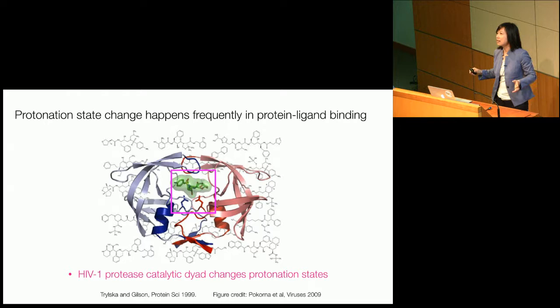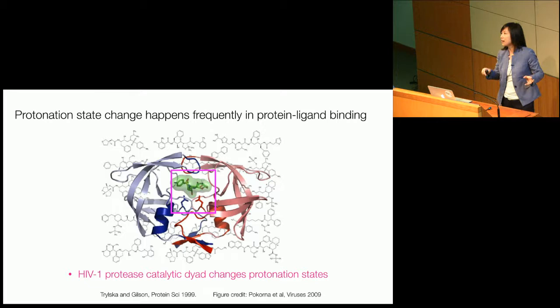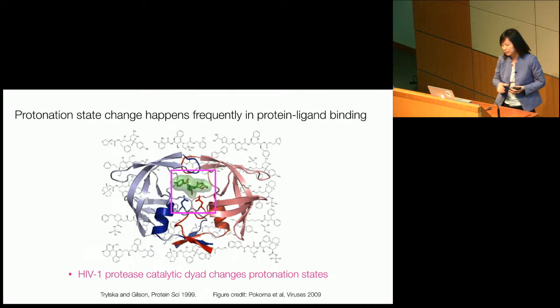Does this happen often in protein-ligand binding? My answer is yes. If you look at many systems — shown here as an example, HIV protease — it's got aspartic residues looking at each other in the active site. Upon ligand binding, depending on the type of ligand, the aspartate residues can change their protonation state, and the ligand itself can also change protonation state. Today I'm going to talk about the difficult case with variable protonation states for both the protein and the ligand.